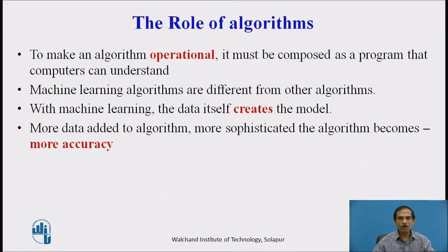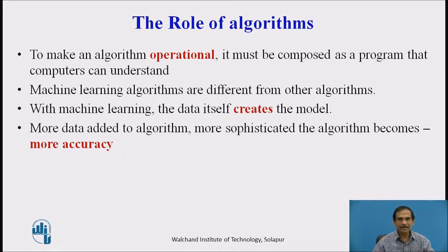The first core component of machine learning is the algorithm. This algorithm makes machine learning operational and must be composed as a program that computers can understand. A variety of machine learning algorithms can be selected and combined — for example, you may use association rule mining and then optimize the rules generated using a genetic algorithm, so that the combination of both algorithms produces an optimized result.